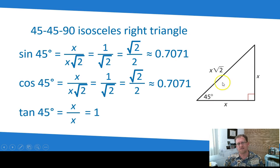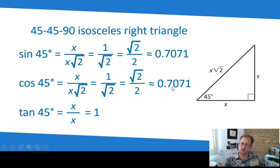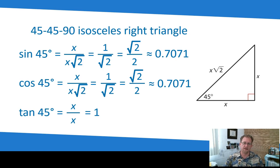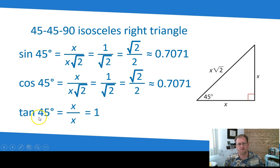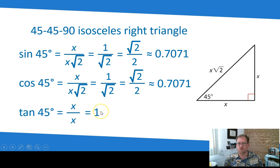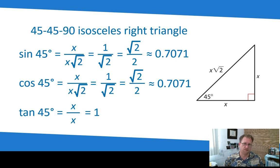Because this is an isosceles triangle, look what happens with the cosine. That's adjacent over hypotenuse, which is also x over x radical 2. So all the math is exactly the same — that's why at 45 degrees only, sine and cosine are equal to each other, because at 45 degrees you're in an isosceles triangle. The tangent of 45 degrees is opposite over adjacent — both of those are x, and any number divided by itself is 1. So the tangent of 45 degrees is 1, and that will be true in every 45-degree right triangle.